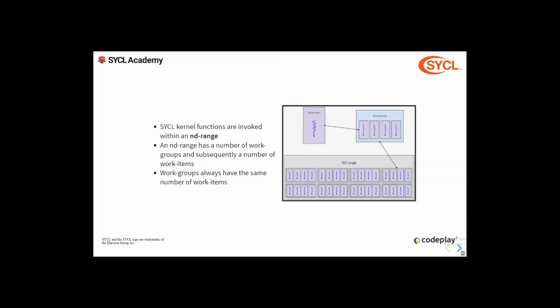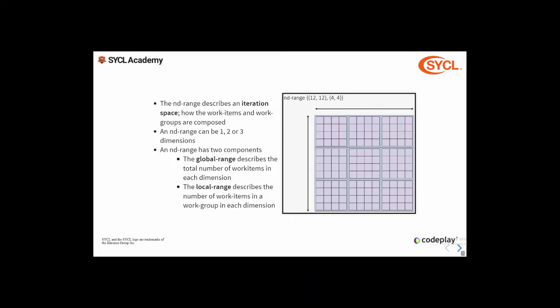The full iteration space that a SYCL kernel function is invoked over is described by what is referred to as an ND range, which means n-dimensional range. An ND range contains a number of work groups and each of those subsequently contains a number of work items. The work groups are always the same size — they always have the same number of work items each. An ND range describes a multi-dimensional iteration space, effectively how work items and work groups are composed. An ND range can be one, two or three dimensional.